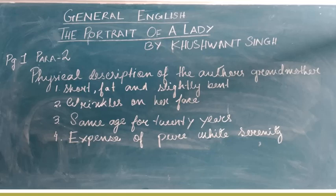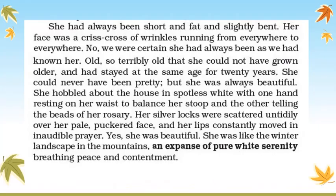The key points describing the grandmother are: she was short, fat, and slightly bent; she had wrinkles on her face; she was of the same age for 20 years; and she was like an expanse of pure white serenity. Now let us read these lines from the second paragraph.